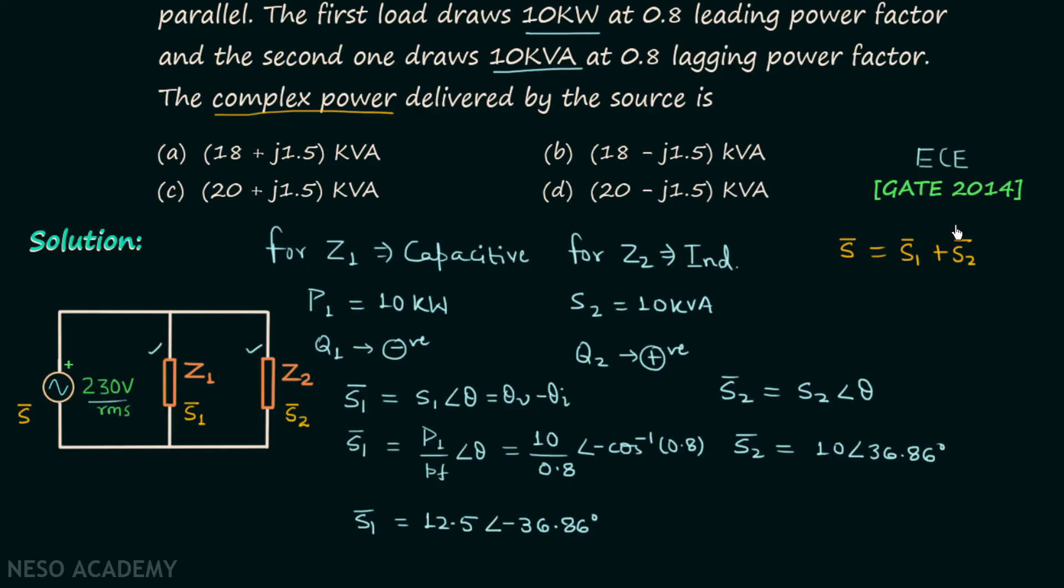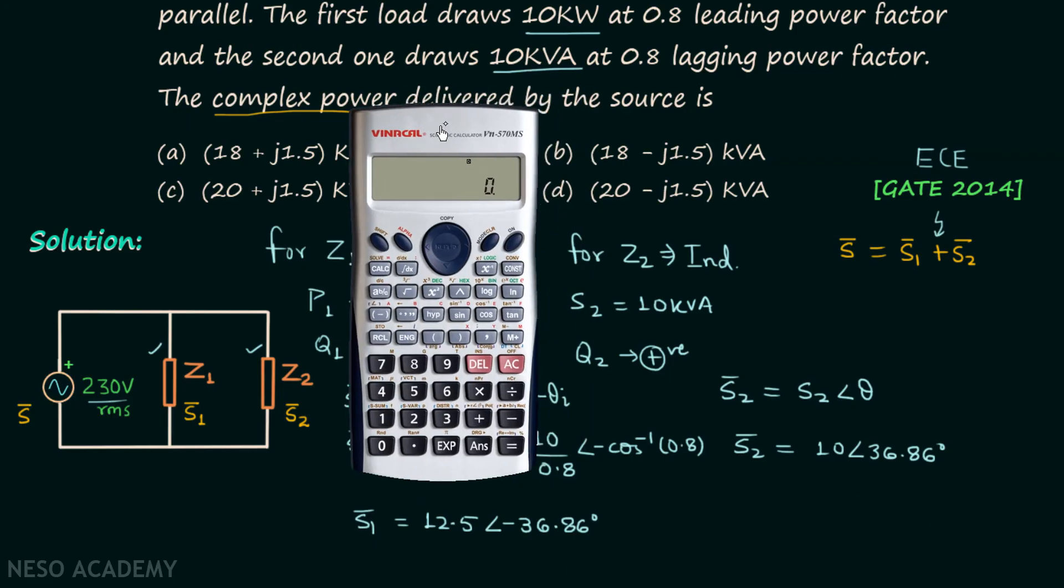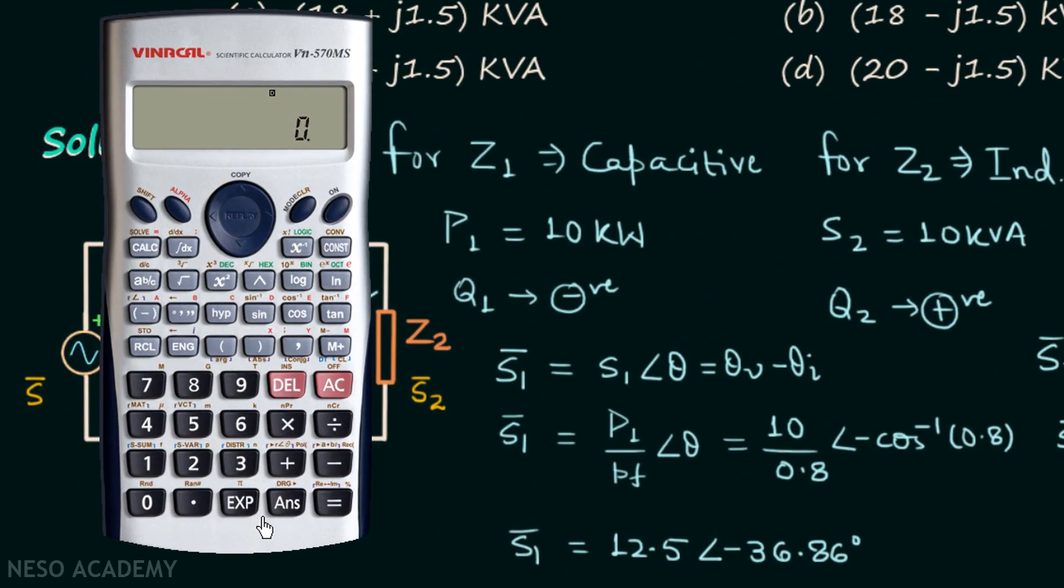We are trying to perform the addition of S1 and S2, and therefore we will first have the rectangular forms of S1 and S2. We will use our scientific calculator for this. I will first convert S1 to the rectangular form. For this I will press shift and then on this negative button we have REC. Inside the bracket we will input the magnitude and the angle separated by comma.